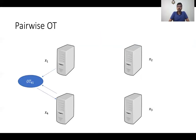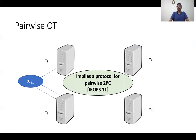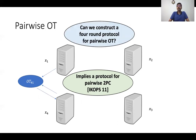Similarly, between the first and the fourth party, we run an instance OT41 where the fourth party acts as the receiver and the first party acts as the sender, and so on. This pairwise OT functionality is interesting because it readily implies a protocol for pairwise two-party computation, where you compute some two-party functionality between each ordered pair of parties. This result follows directly from the work of Ishai et al. in 2011. The main question we are interested in is: can we construct a four-round protocol for computing this pairwise OT functionality?